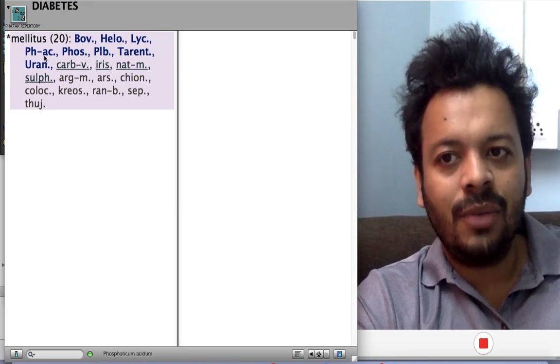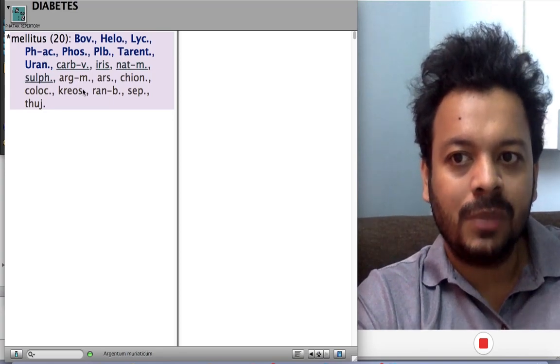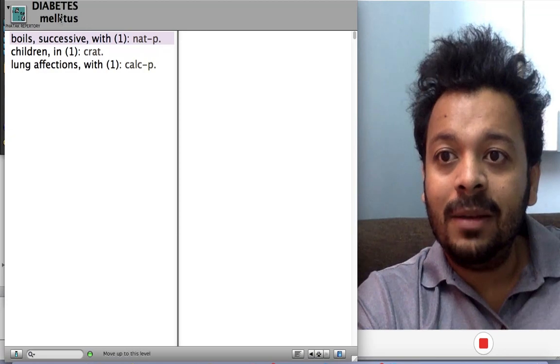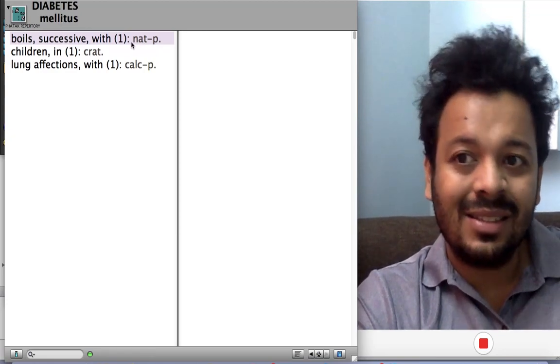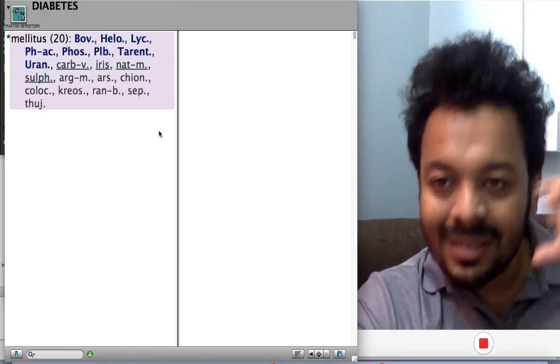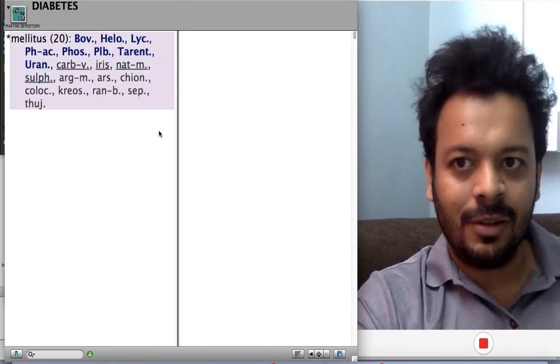Phosphoric acid, we know this as a very important remedy for diabetes. Argentum metallicum: with diabetes, swelling of ankle. Natrum phos: along with successive boils and lung affection. Calcarea: also many interesting clinical tips I have written in this book.